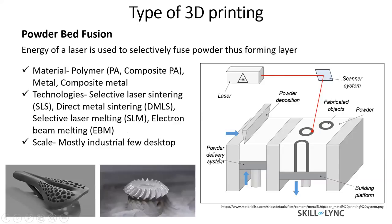There are a couple of desktop-scale machines that came out in the last couple of years, but they are still not at the level of ease of an SLA machine. The materials that can be used for this kind of process are polyamide and composite polyamide for polymer, and also metal and metal composites. Based on how you melt your powder or what your energy source is, this technology could be selective laser sintering, direct metal sintering, selective laser melting, or electron beam melting. Selective laser sintering uses a laser and only prints in polymer, while the other three technologies work for metal, directly using metal powder.